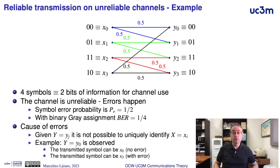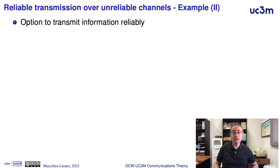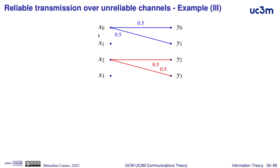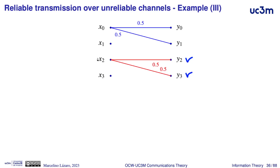However, it is possible to use a trick to have a reliable transmission. This trick is just to select a subset of the symbols with non-overlapping outputs, and to transmit only these symbols. For instance, if we only transmit X0 and X2, the outputs do not overlap. If we now see Y0 or Y1, for sure the transmitted symbol was X0.